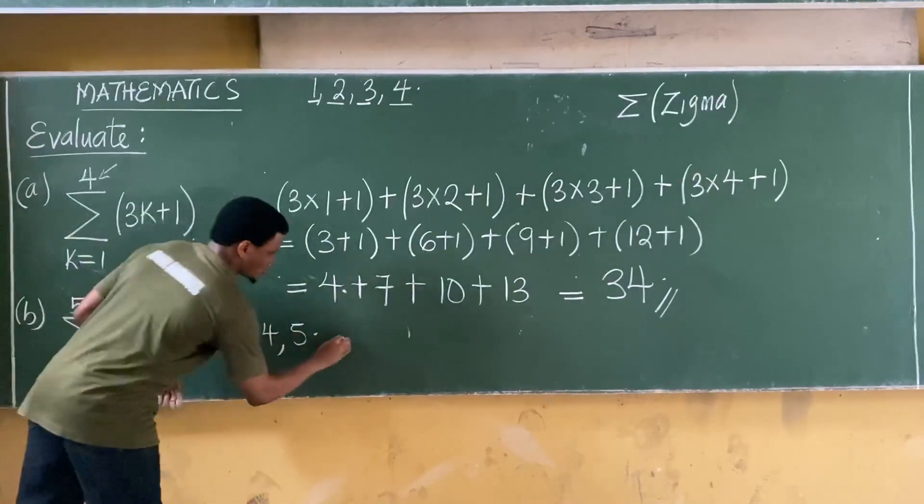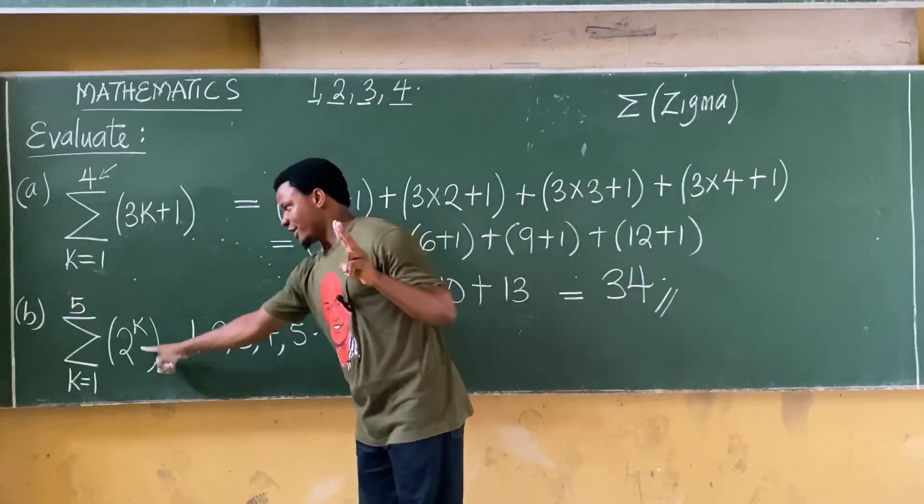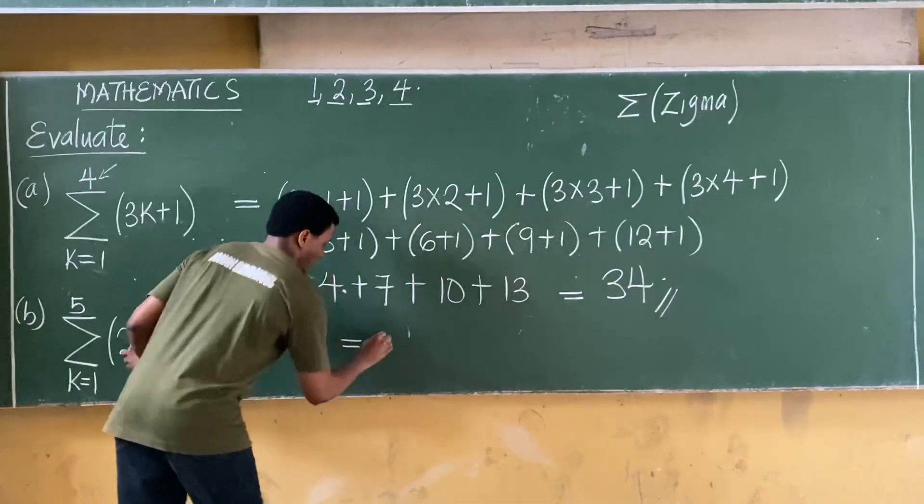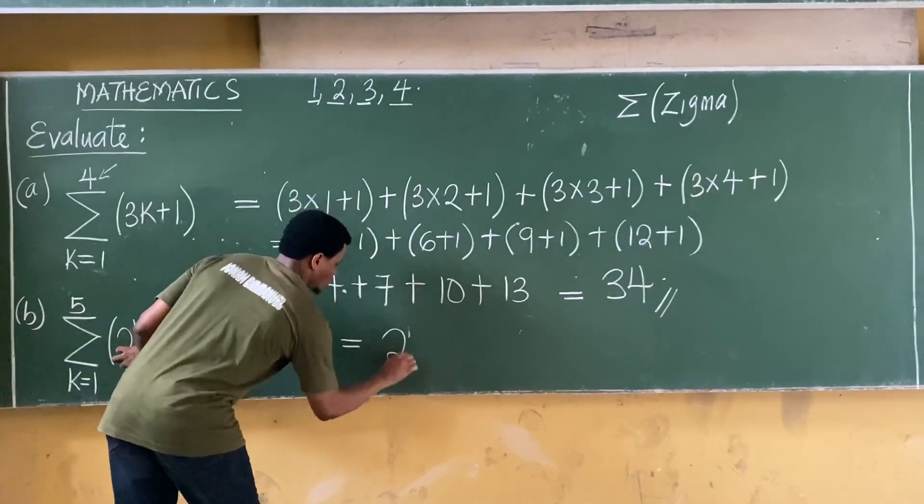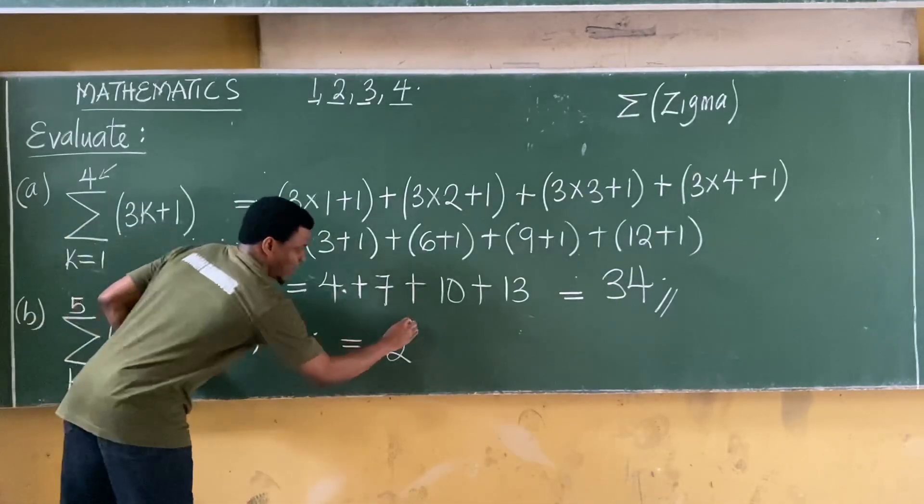Let me give you a hint. I will just provide the first two terms for this one here. Your first two terms will be 2 raised to power k, so I'm taking the first k as being one to become 2 to power 1.